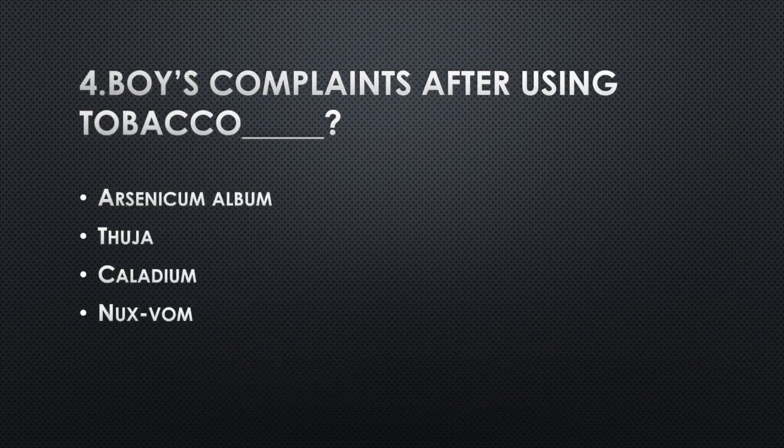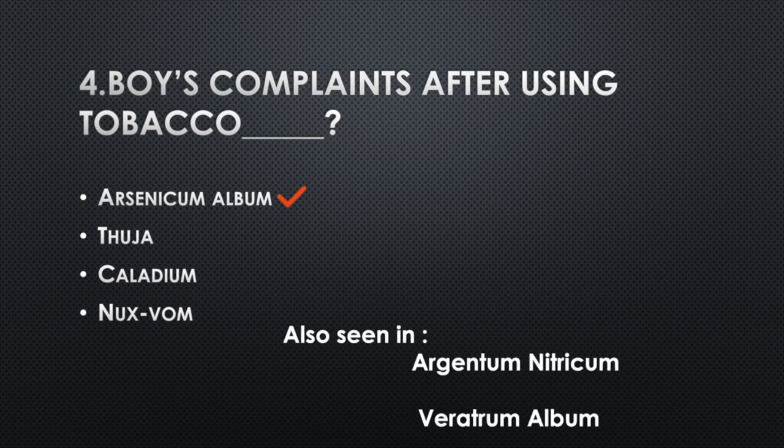Voice complaints after using tobacco — Option A: Arsenicum album, Option B: Thuja, Option C: Caladium, Option D: Nux vomica. Answer: Option A, Arsenicum album. This symptom is also seen in Argentum nitricum and Veratrum album.